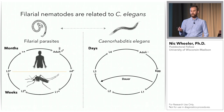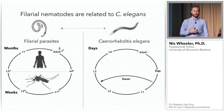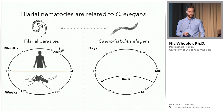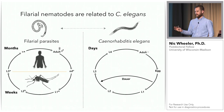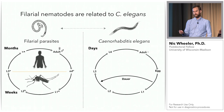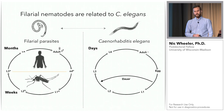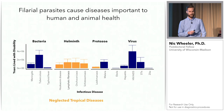Filarial nematodes are related to C. elegans and so they have some similarities, particularly in life cycle — there are a number of molts. C. elegans are hermaphrodites while filarial worms have males and females. We can use C. elegans to learn about filarial parasites. The nice thing about C. elegans is that the life cycle only goes three and a half days, whereas filarial parasites are obligate parasites always in a host — it takes two weeks in the mosquito and then several months to become patent in the human, where they can live for years.